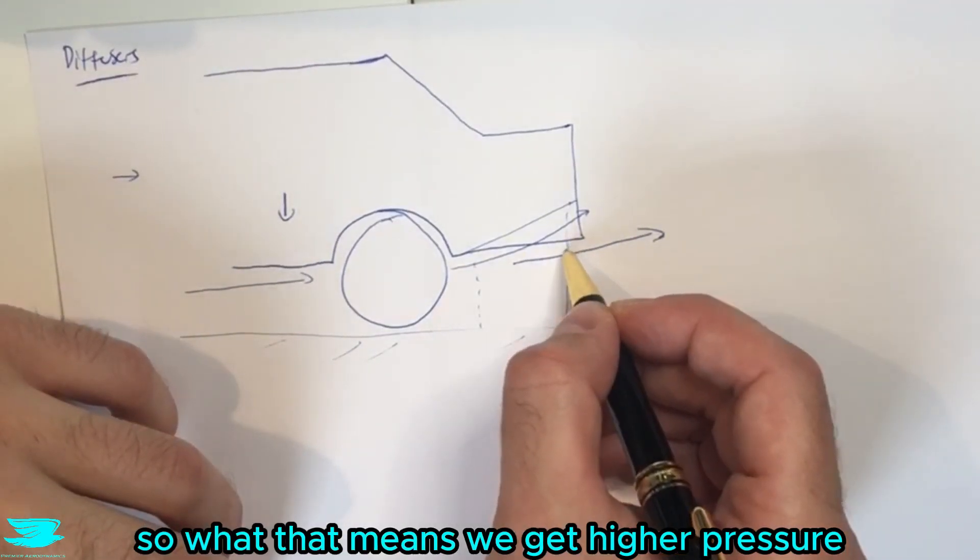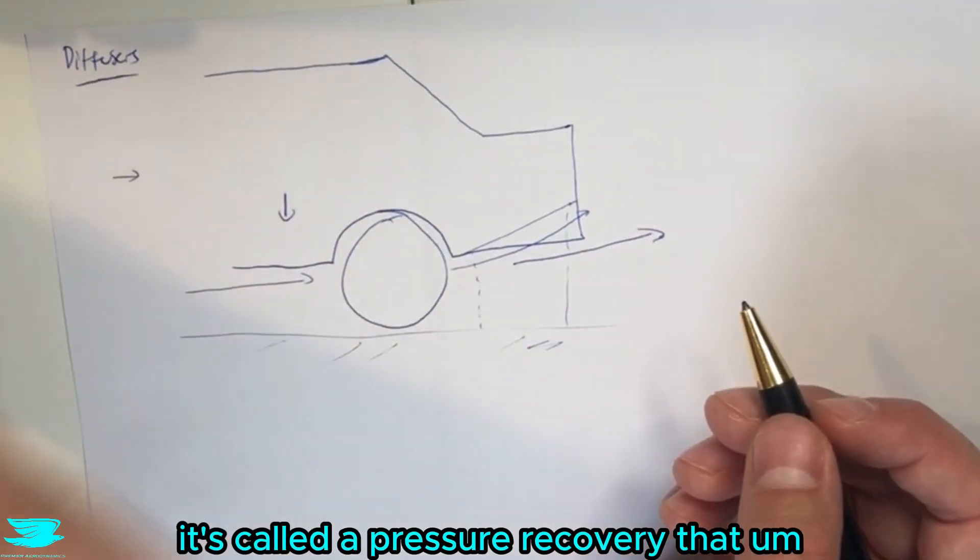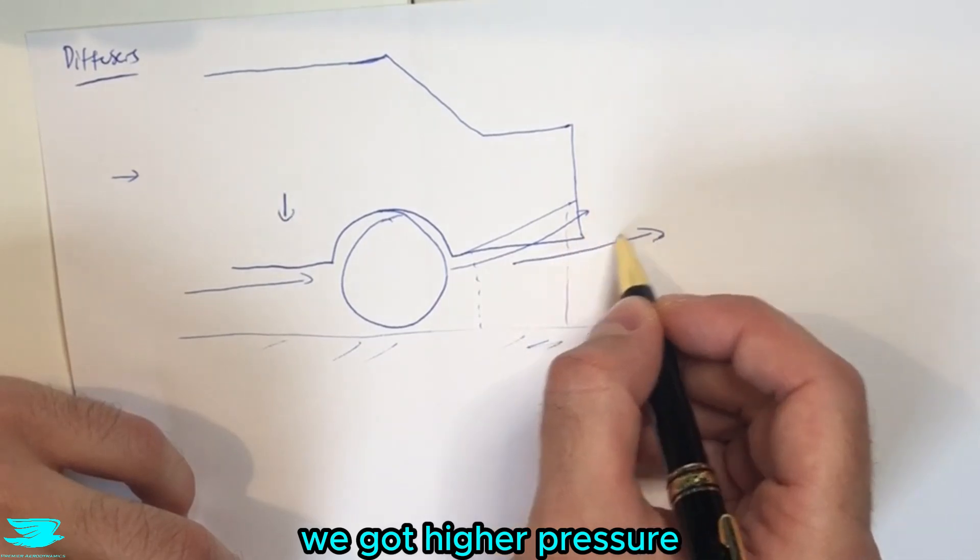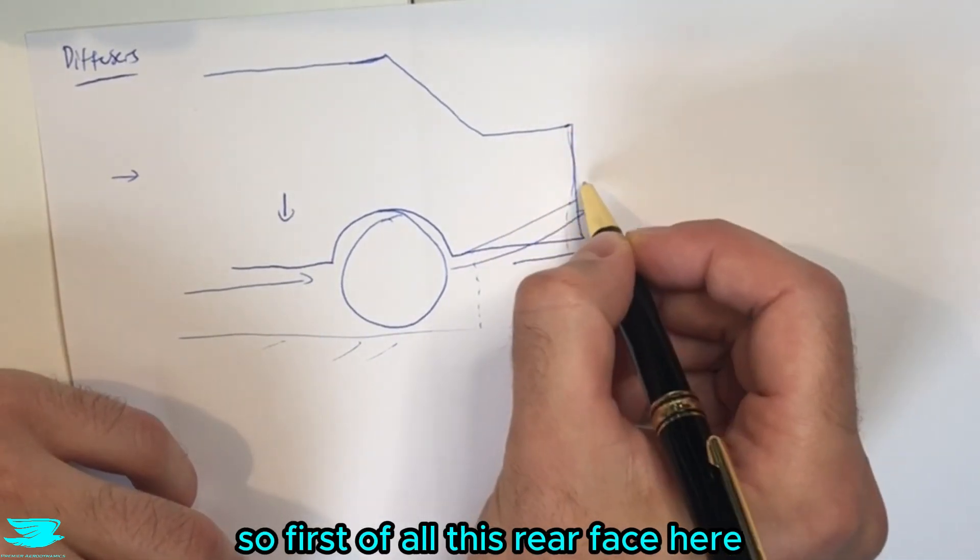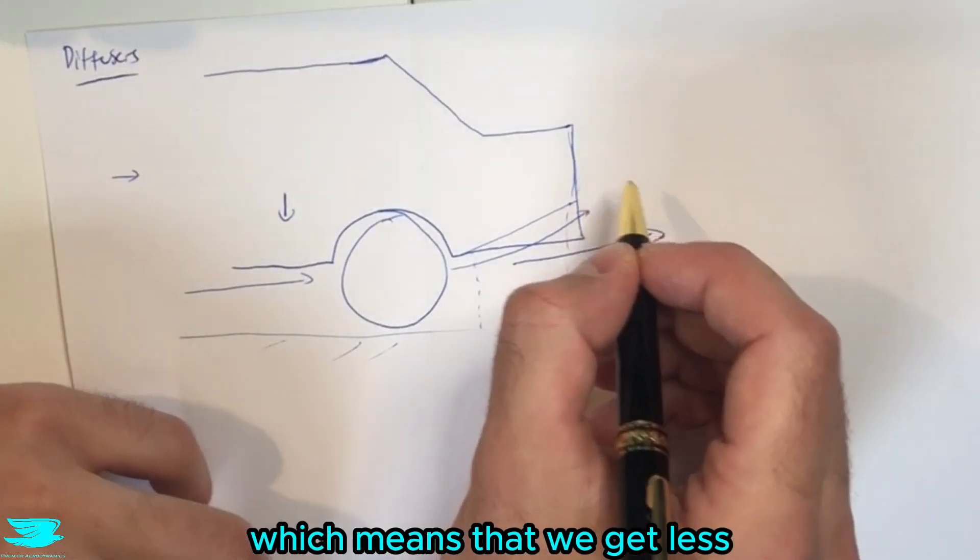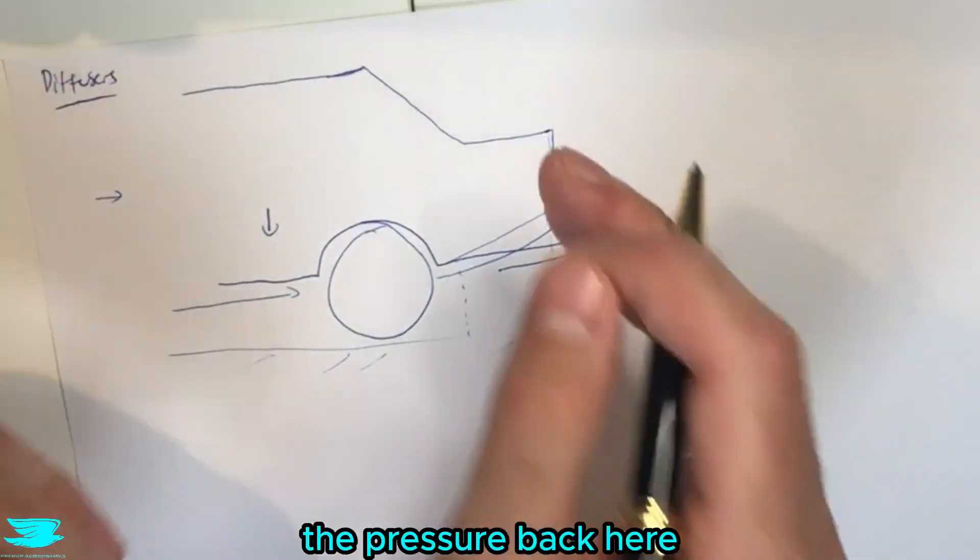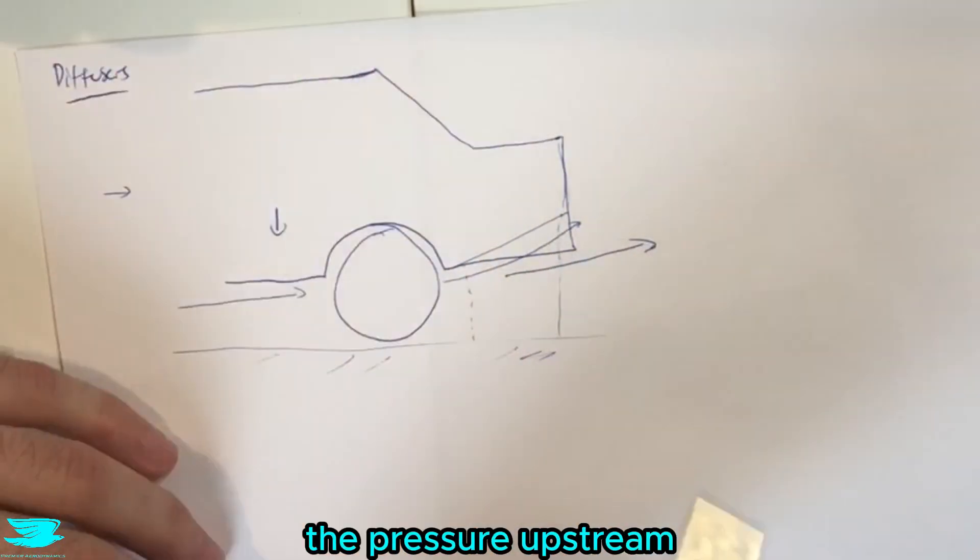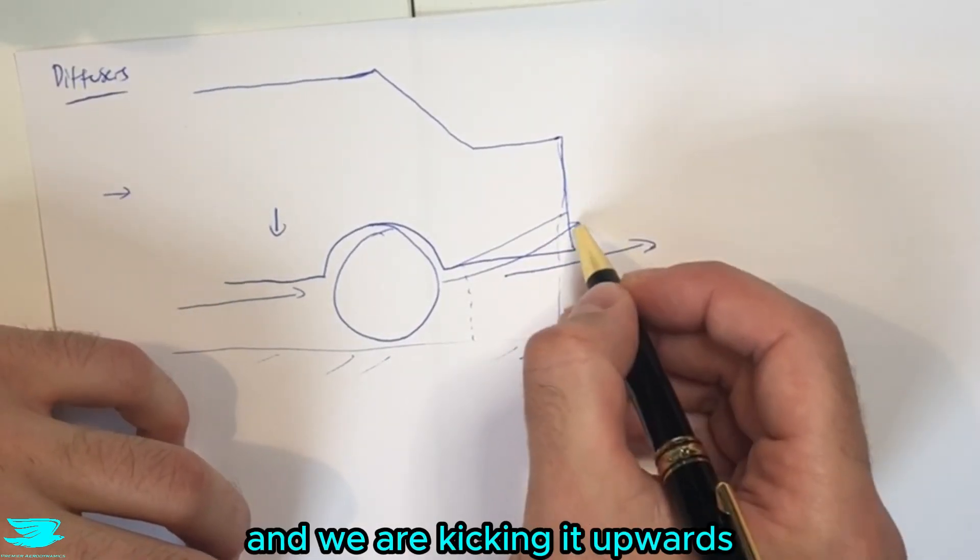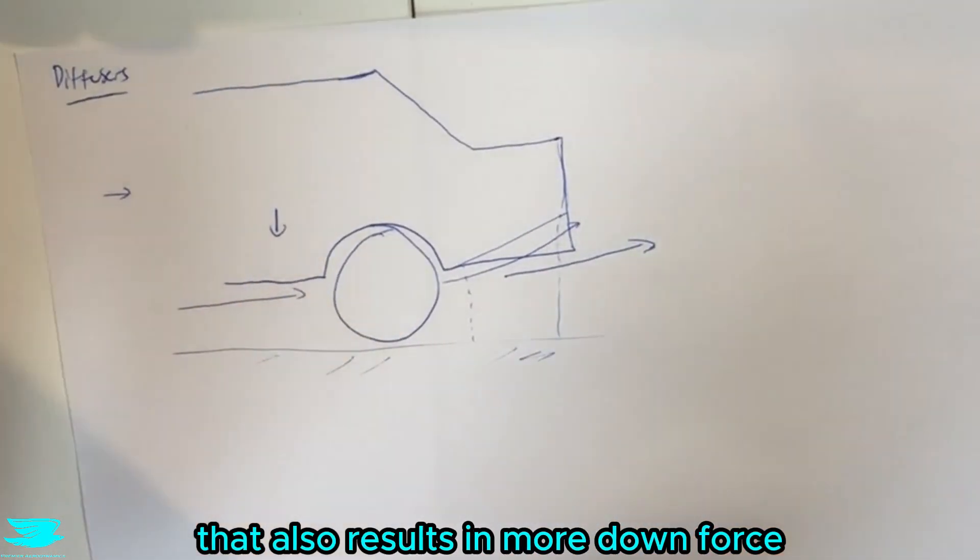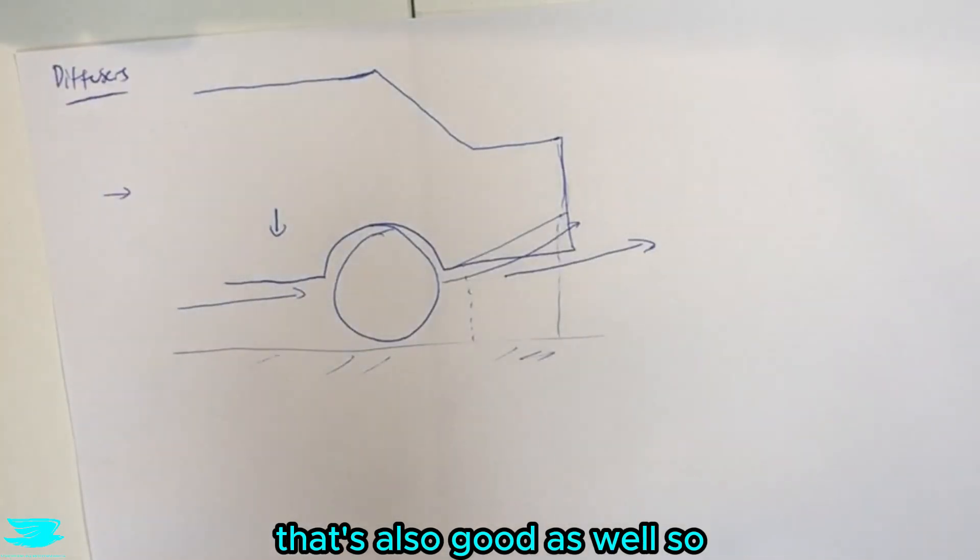So what that means is we get higher pressure - it's called a pressure recovery, the term - we get higher pressure being pushed into the flow here. So first of all this rear face here will be exposed to a higher pressure which means that we get less drag because the pressure back here is more equalized with the pressure upstream. But also because we are directing the flow upwards and kicking it upwards, that also results in more downforce. So that's also good as well.